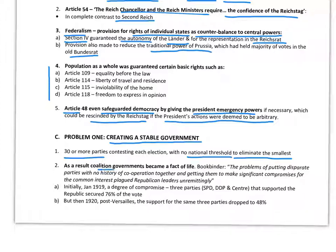As a result, coalition governments became a fact of life. As the historian Bookbinder notes, it was very difficult to get parties to make compromises and work together. Coalitions only work if parties are prepared to find common ground. Also importantly, there was no history of cooperation between the parties because parliamentary democracy was very new to Germany. Germany itself had only existed since 1871, whereas Britain had had democratic institutions for hundreds of years, allowing parties time to develop the ability to compromise.